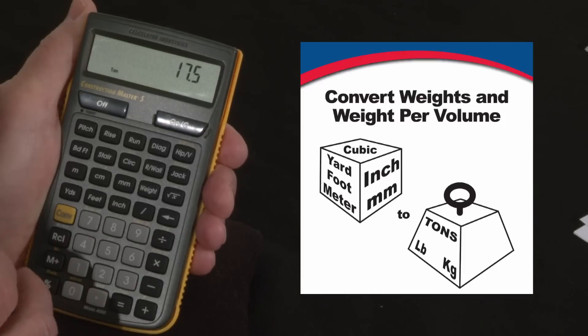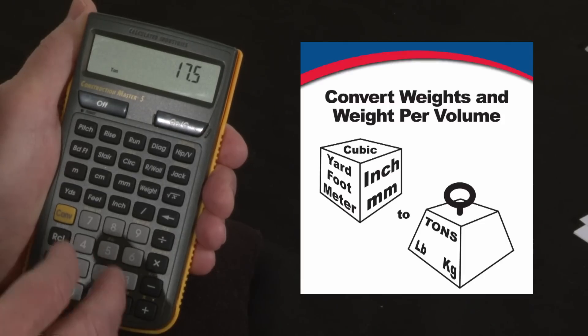Now the default value in the calculator is 1.5 tons per cubic yard. You can set that to whatever you want and change it at any time.